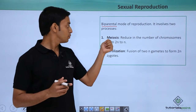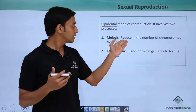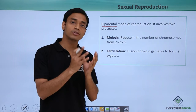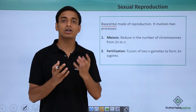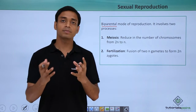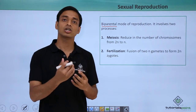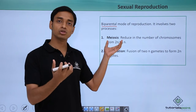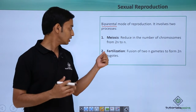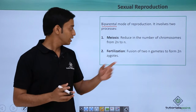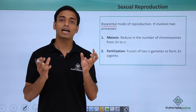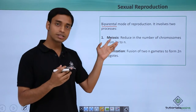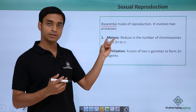Sexual reproduction involves two processes. First is meiosis, which reduces the number of chromosomes from 2n to n — for example, from 46 to 23 chromosomes in humans. The second process is fertilization, where two gametes with n chromosomes fuse to form a 2n zygote. Fertilization is essentially the reverse of meiosis.